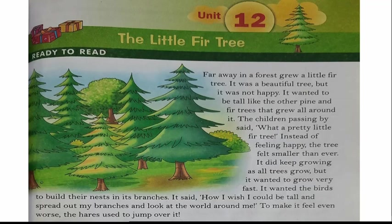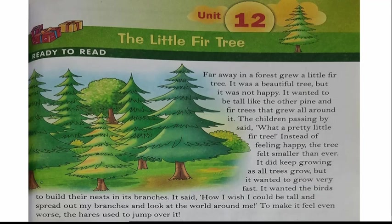But it wanted to grow very fast. It wanted the birds to build their nests in its branches. It said, 'How I wish I could be tall and spread out my branches and look at the world around me.' To make it feel even worse, the hares used to jump over it, and this made the little tree feel even more unhappy.